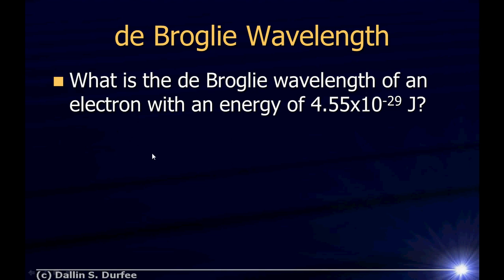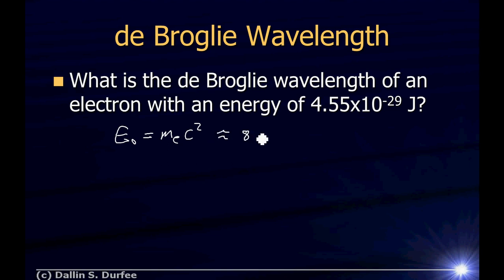The first question you may have is, what do I mean by energy? Is this the total energy of the electron or just its kinetic energy? You can deduce that it can only be the kinetic energy by saying, what is the rest energy of an electron? That's the mass of an electron times c squared. If you plug the numbers in, you'll find that this is, to one significant digit, 8 times 10 to the negative 14 joules, which is way bigger than that. So this can't possibly include the rest energy — it must just be the kinetic energy. So this will be our kinetic energy: 4.55 times 10 to the negative 29 joules.